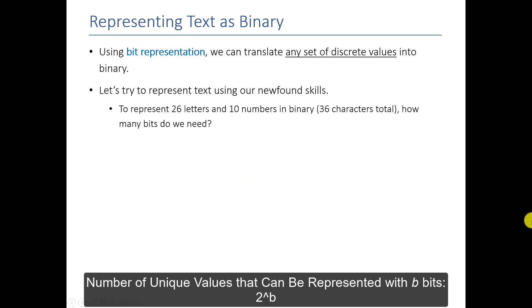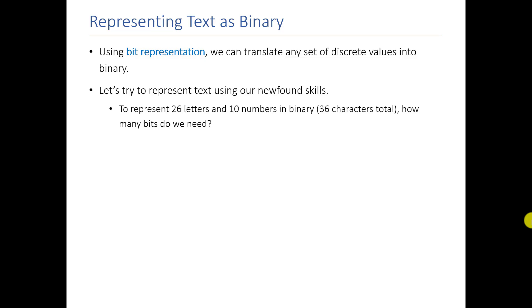Well, if you remember from the previous videos, you would say that we would have to go 2 to the B, and that would represent the number of values. So 2 to the 5 would be 32. That's not quite enough for 36, so you would need 2 to the 6, and that would be 64. And 6 bits would be enough to represent 36 characters in binary.